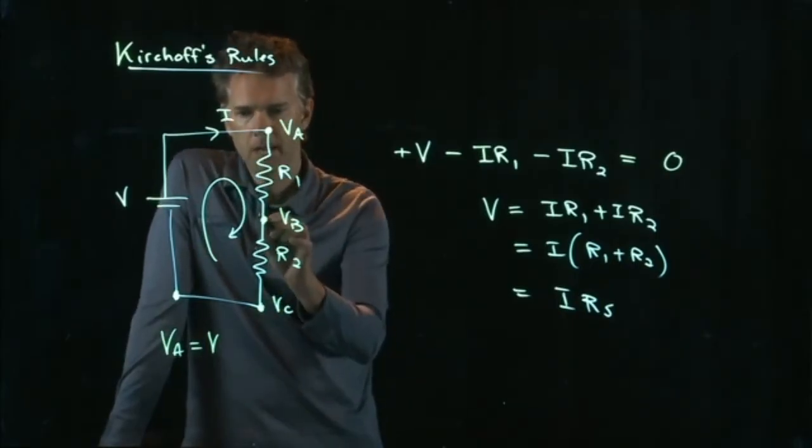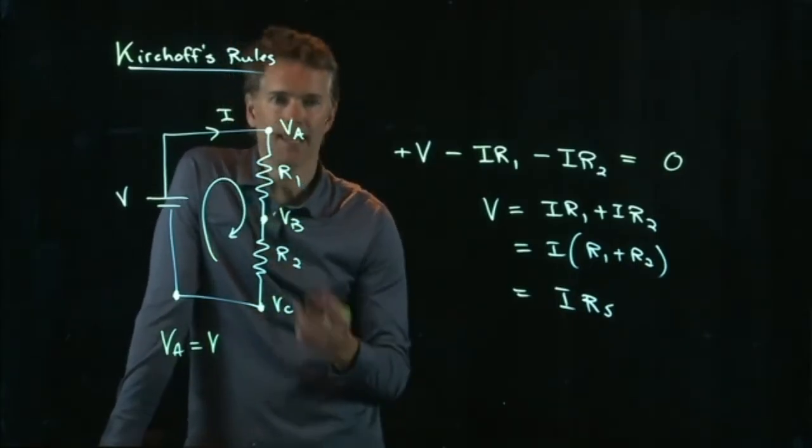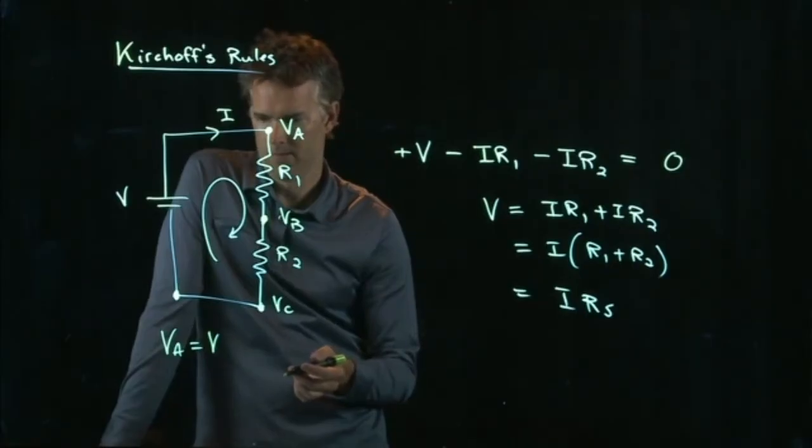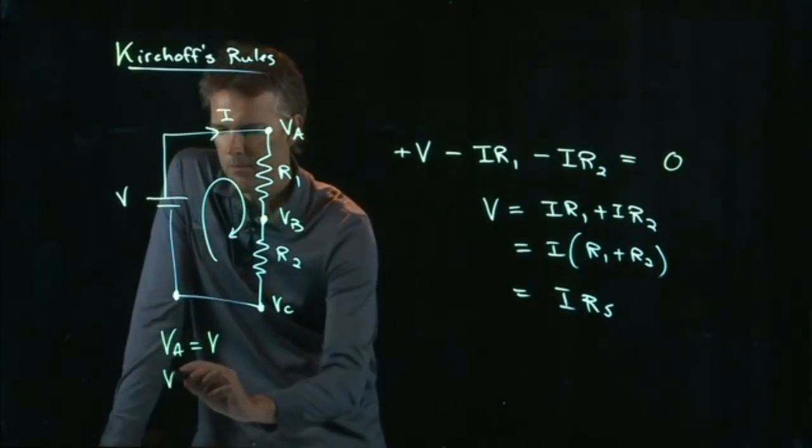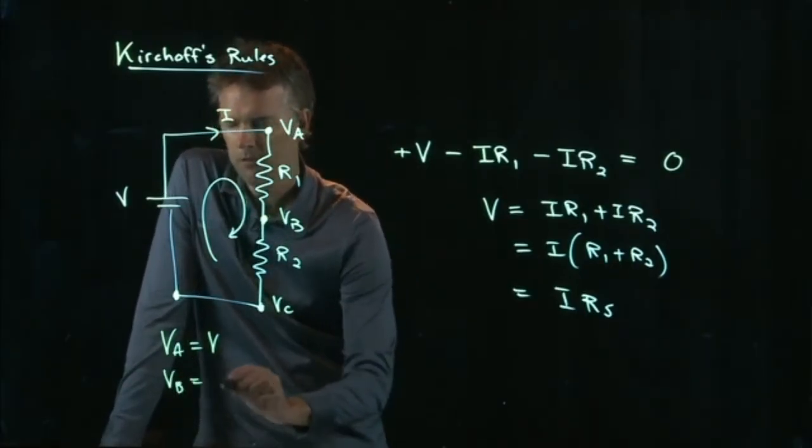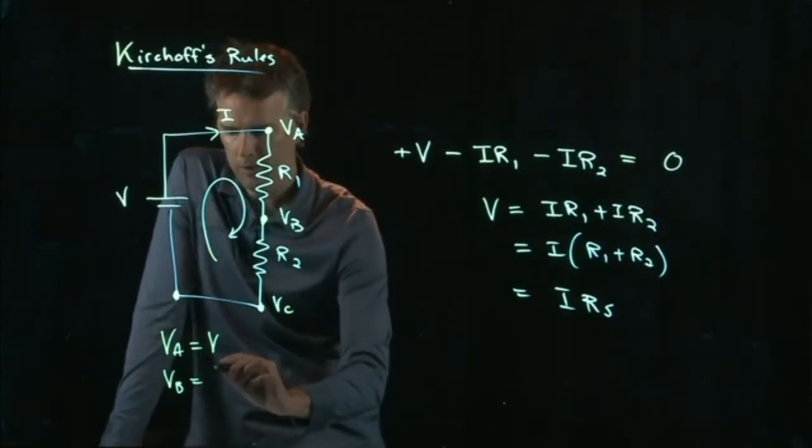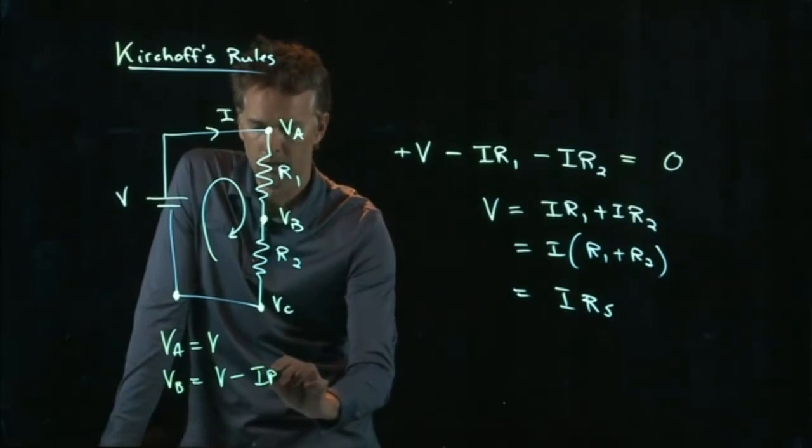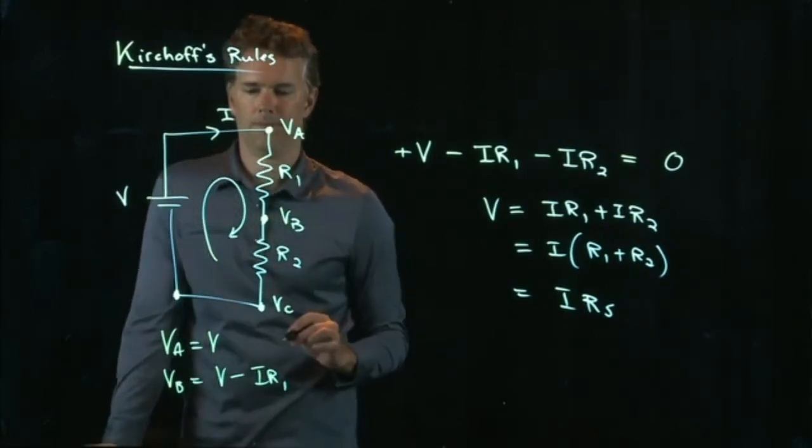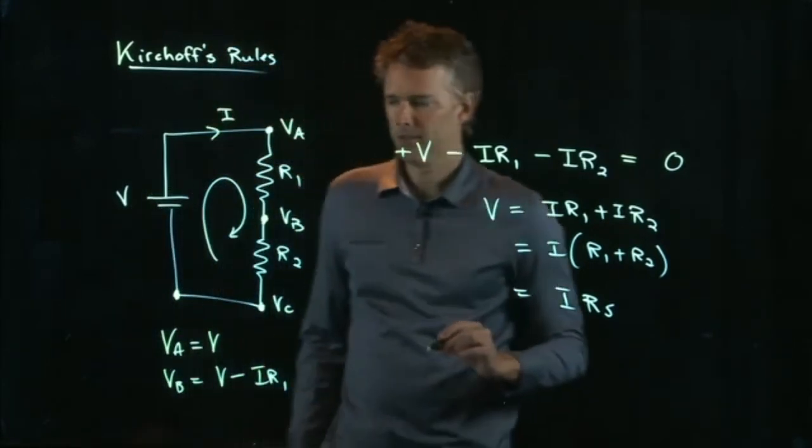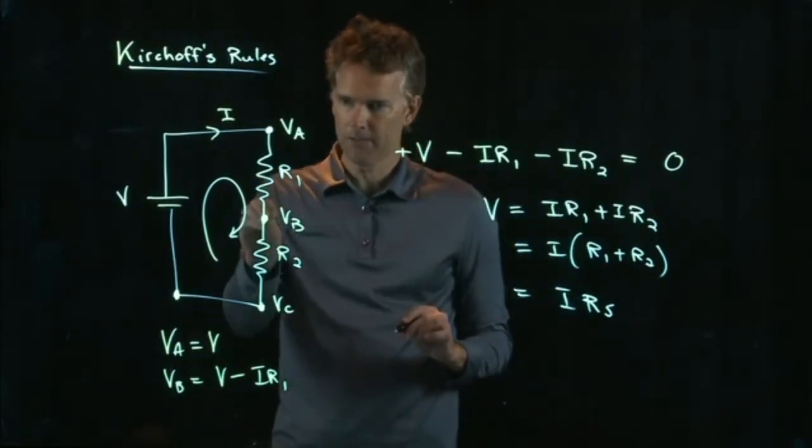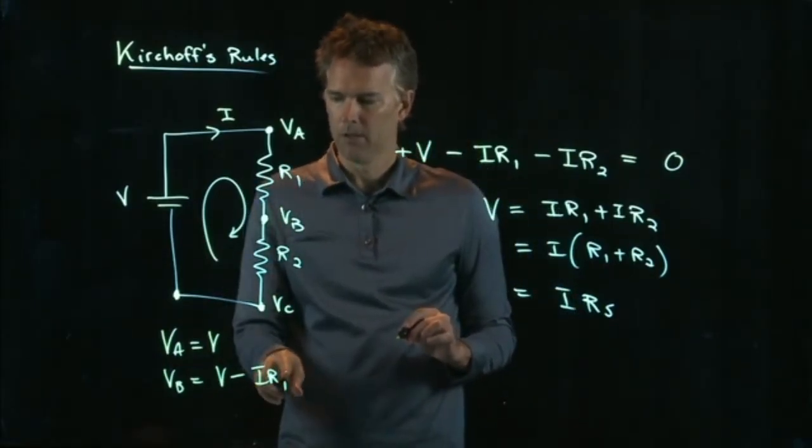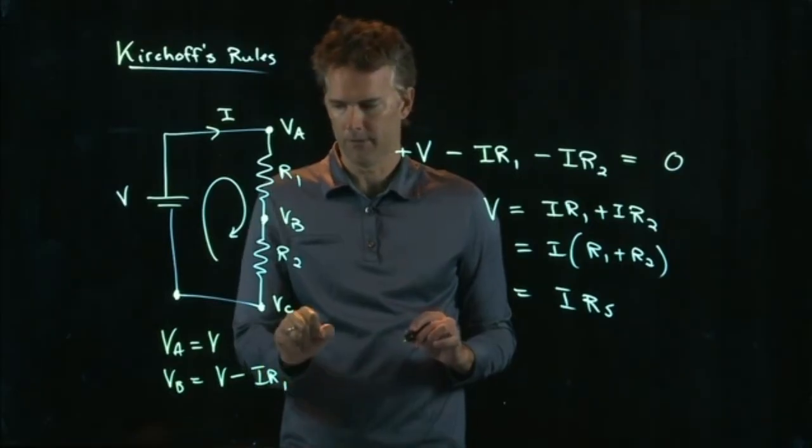But VB, the voltage here, is going to be less than that. Right? VB is going to be the battery voltage V minus how much it drops through R1. So that's going to be a little bit less because you have current and you have resistance.